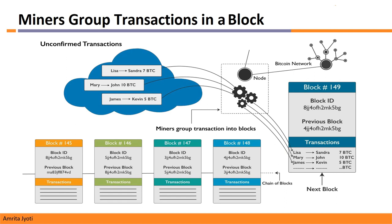All those transactions are made into one block. When this block is completely verified, it is given a unique ID called the hash ID, which makes that block unique. Then this block gets added to the existing blockchain. You can see here that each block is connected to the previous block with the help of the previous hash. It is not possible to add any new block in between.